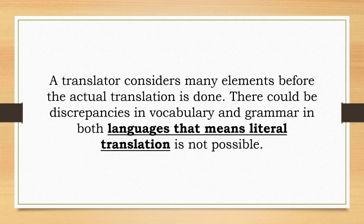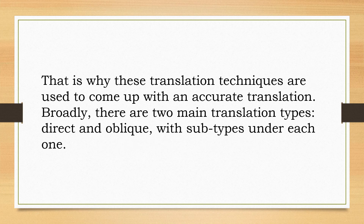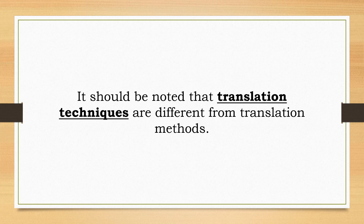A translator considers many elements before the actual translation is done. There could be discrepancies in vocabulary and grammar in both languages, meaning literal translation is not always possible. That is why translation techniques are used to come up with an accurate translation. Broadly, there are two main translation types — direct and oblique — with subtypes under each one.